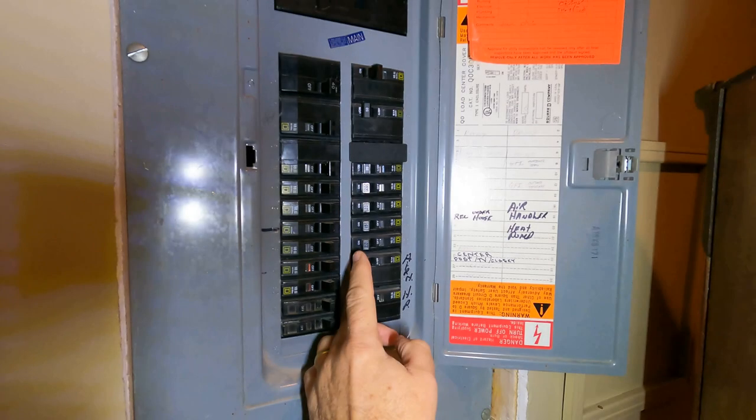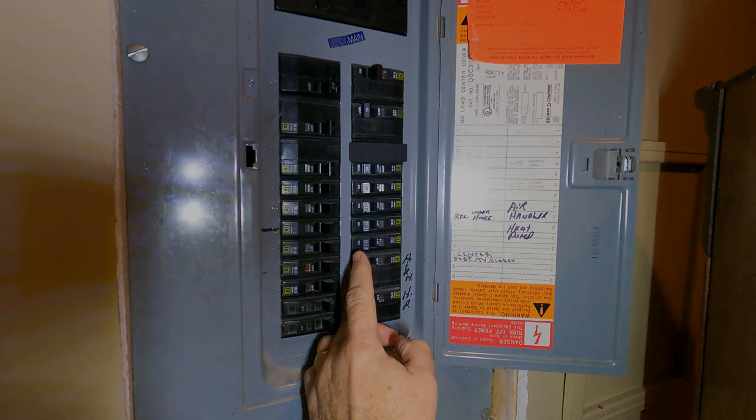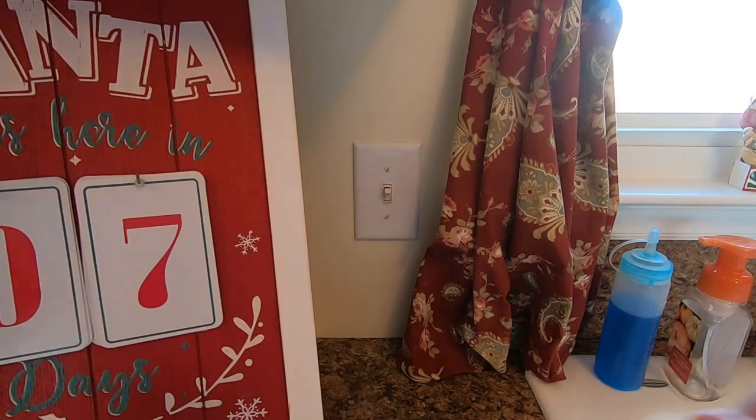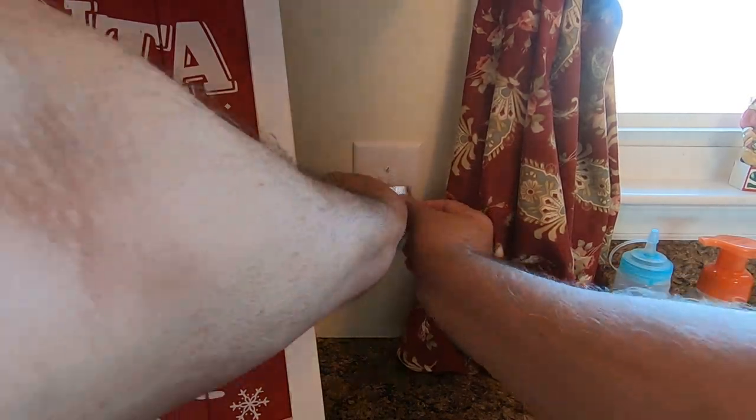Before I began working with the wiring I located and tripped the breaker for the garbage disposal switch. Then here at the switch itself, as an extra safety precaution, I stuck a piece of tape in place.